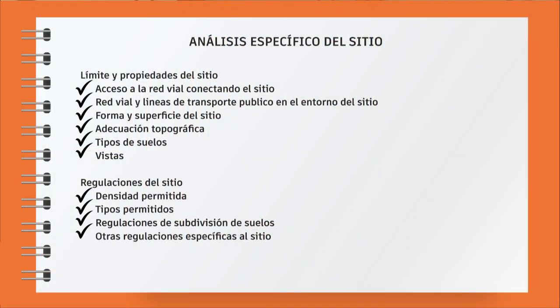Site-specific analysis: access to and road network around the site, public transit lines surrounding the site, the shape and area of the site, topography, suitability, type of soil, views, etc. Then site regulations, if they exist: what densities are allowed, building types, land subdivision regulations, and other specific regulations. It is very important to have a participatory approach to project identification and prioritization.